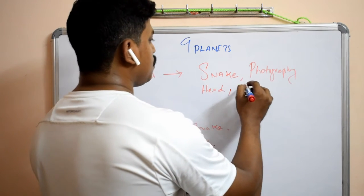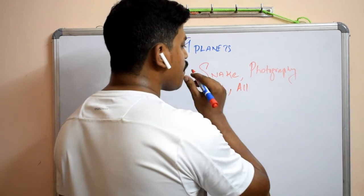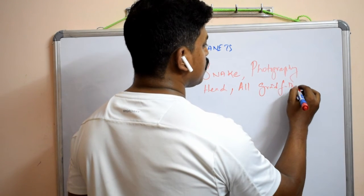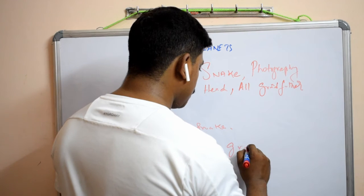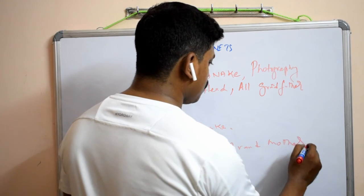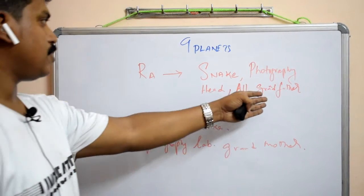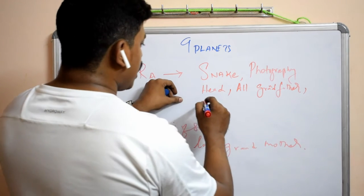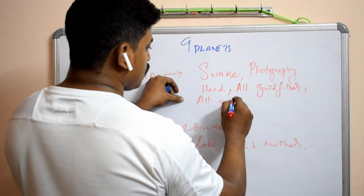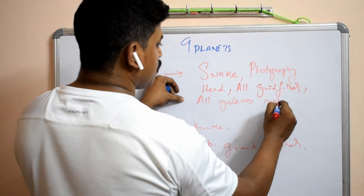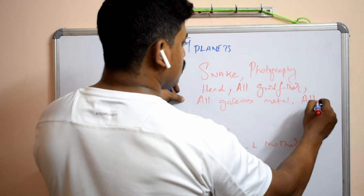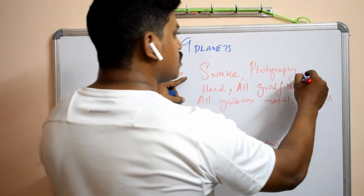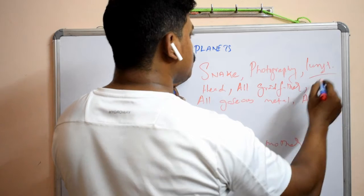For Rahu, all grandfather, grandmother. For Ketu, grandmother. Rahu, grandfather and all gaseous metal. All gaseous comes under Rahu. Lung's disease comes under Rahu.